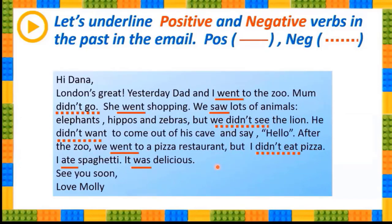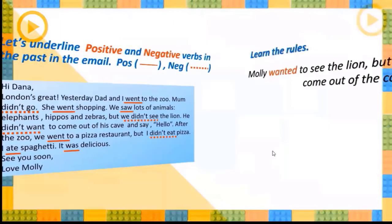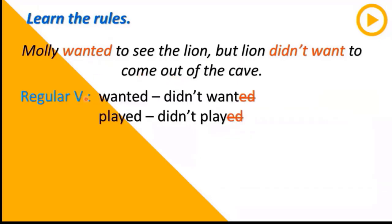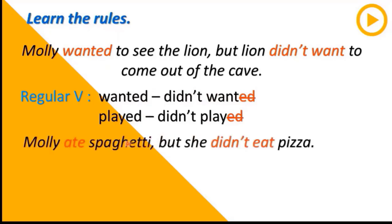Now let's learn how we can change positive sentences into negative in the past. Let's look at this sentence - the verb is a regular verb. 'The lion wanted to see' - but 'the lion didn't want to come out of the cave.' The rule for regular verbs: we erase -ed and put 'didn't' before the verb. So 'wanted' becomes 'didn't want,' and 'played' becomes 'didn't play.'